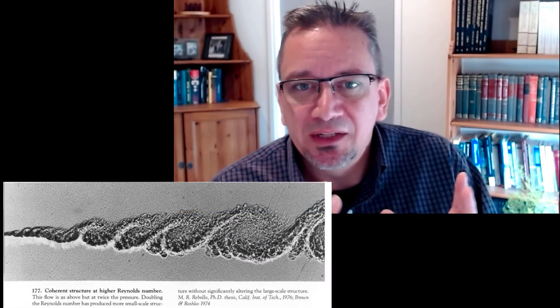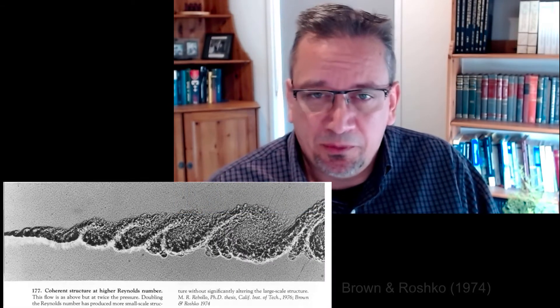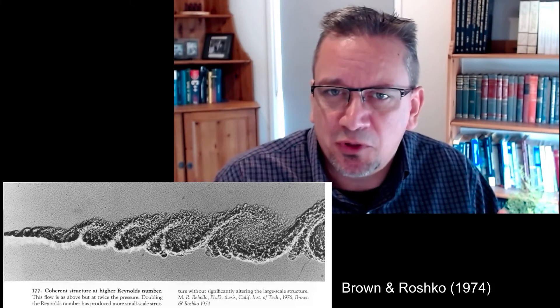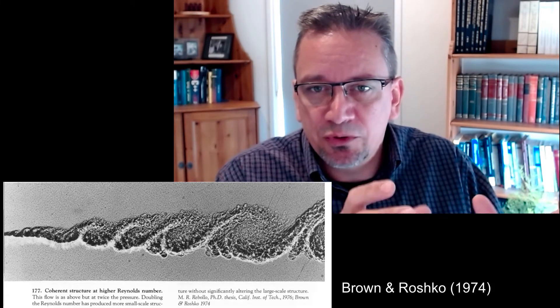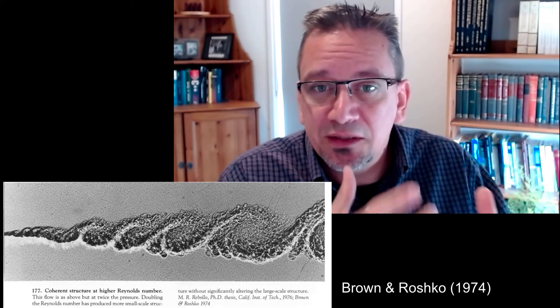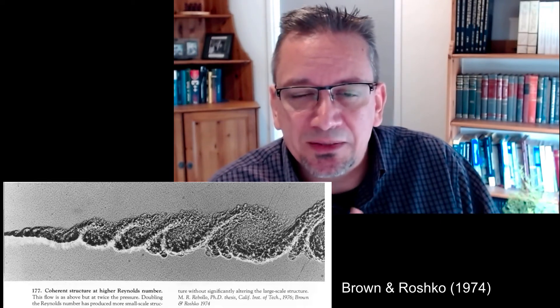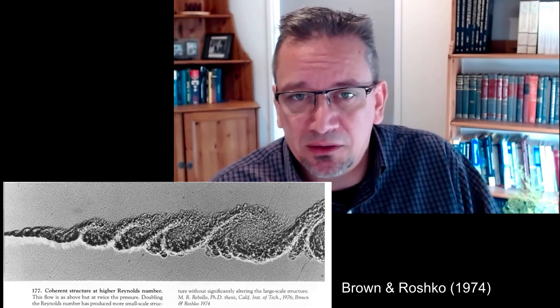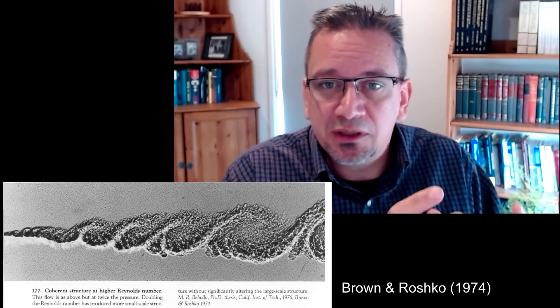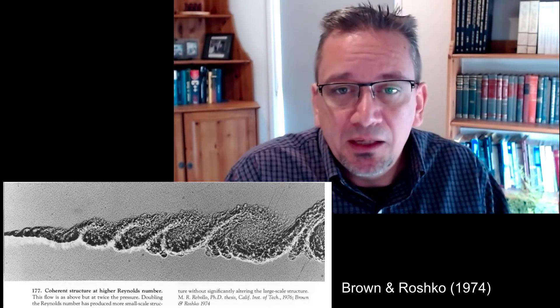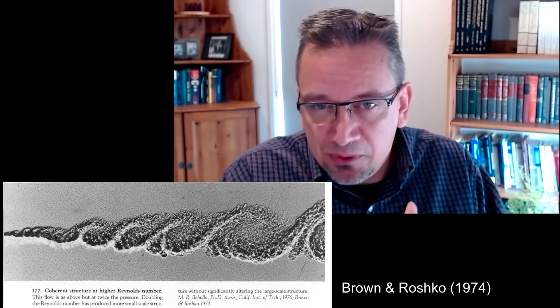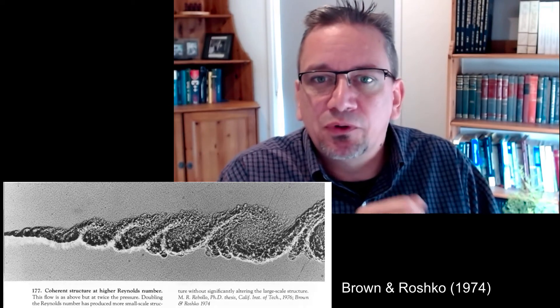The concept of coherent structures was more or less established somewhere in the 1970s. Here is a picture from a famous study of a mixing layer — meaning not a jet, but just looking at the mixing layer between two streams, where one stream is a bit faster than the other, to see how the two mix. What they found is that there are actually large coherent structures present. This is the study from Brown and Roshko, which was in 1974, and there have been many studies on turbulent and coherent structures since then.